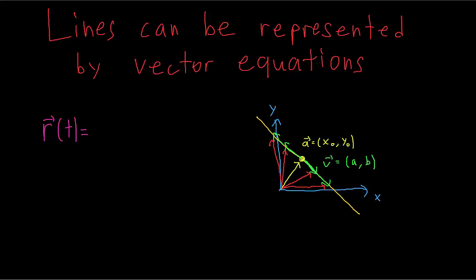We're going to call that scalar the parameter of the equation, which is T. So if the vector T represents all of the points that make up the line, then every point on the line can be written as A plus T multiplied by V. This extends into three dimensions — vectors are just going to have three components now.